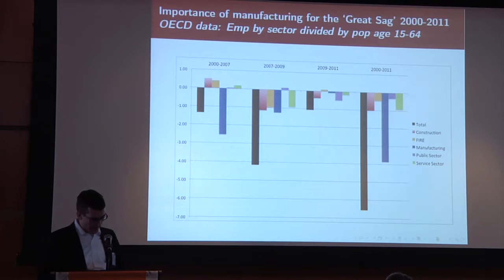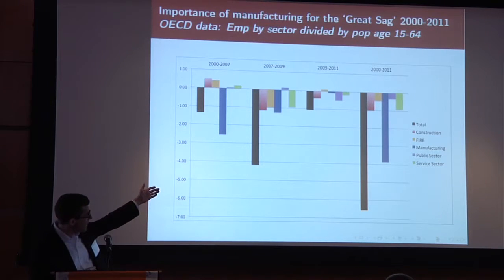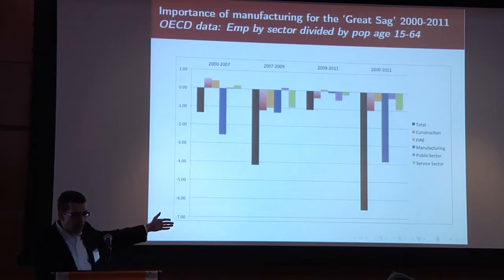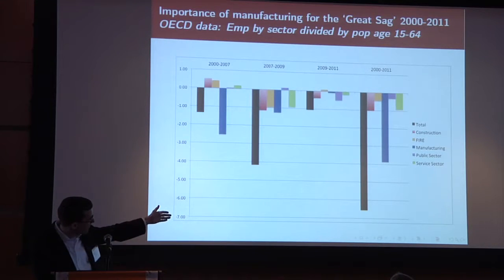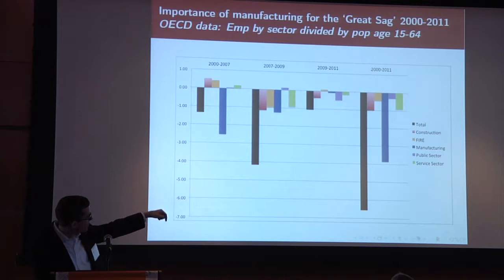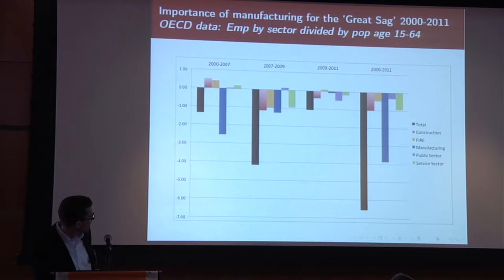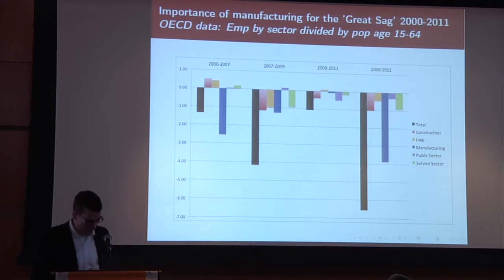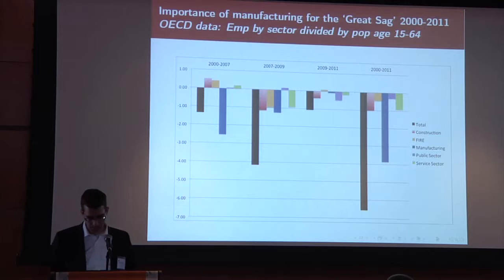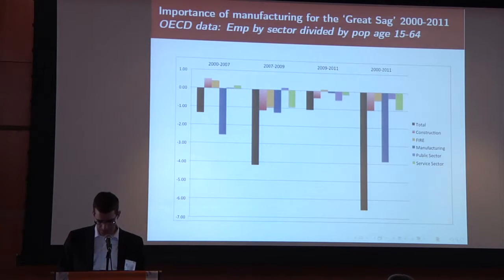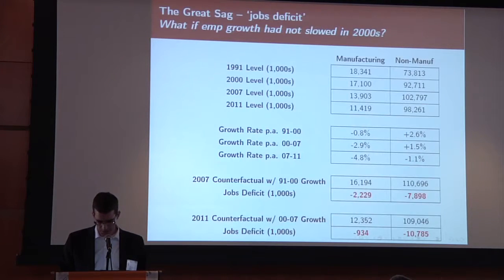When we look at that, we see on the very right-hand side the overall decline in employment over population in the 2000s with the black bar, and you can see that a lot of that actually comes from a decline in manufacturing — the big blue bar. Much of that decline already happened between 2000 and 2007, prior to the Great Recession.